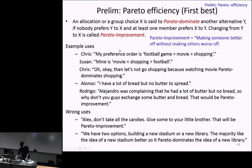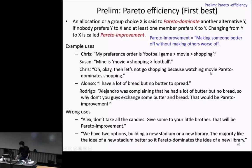Let's look at an example. Chris says his preference order is football, then movie, then shopping — where this inequality means 'is preferred to.' Susan says her preference order is movie, shopping, and football, and she is indifferent between movie and shopping. Chris says let's not go shopping, because watching a movie Pareto dominates shopping. Indeed, someone says movie is better and no one says shopping is better, since Susan is indifferent between movie and shopping. So according to the definition, movie Pareto dominates shopping.